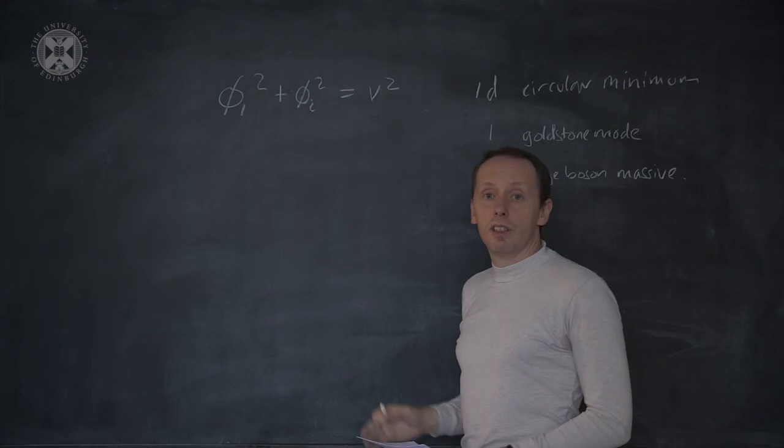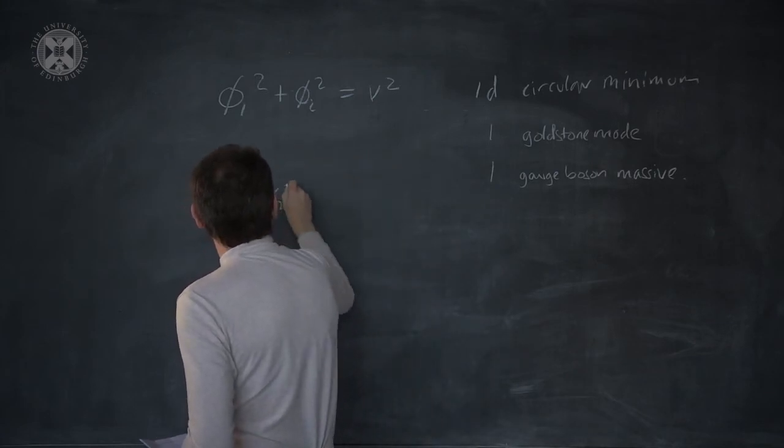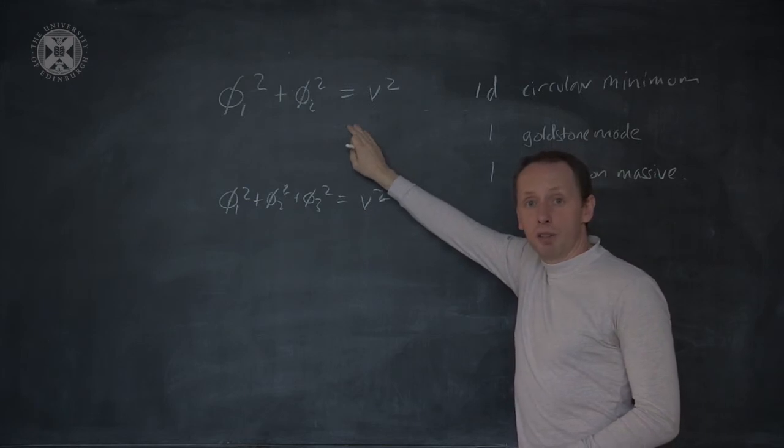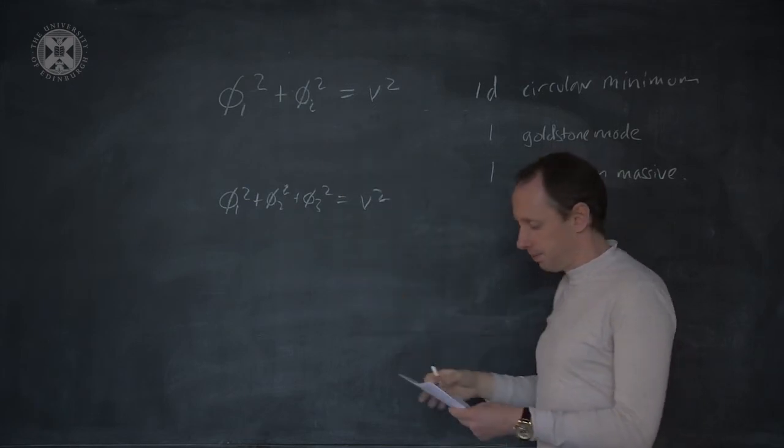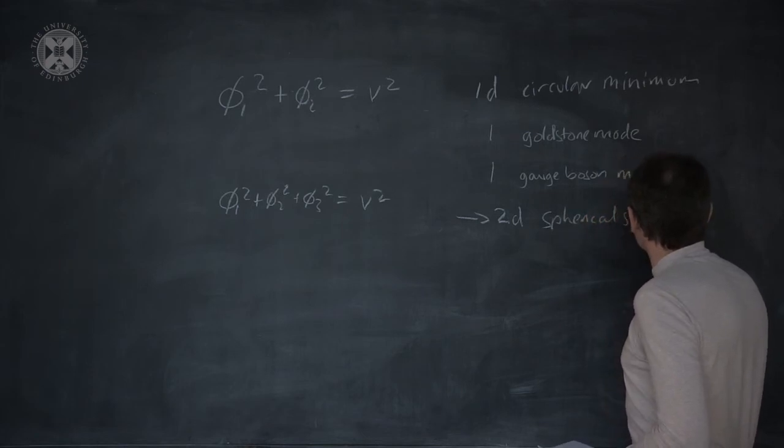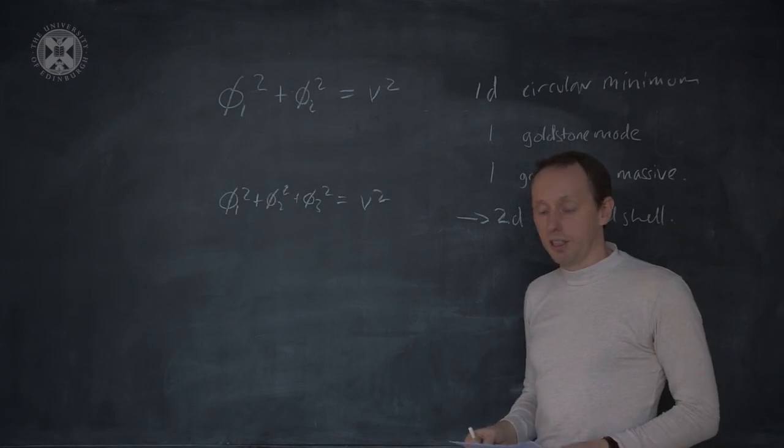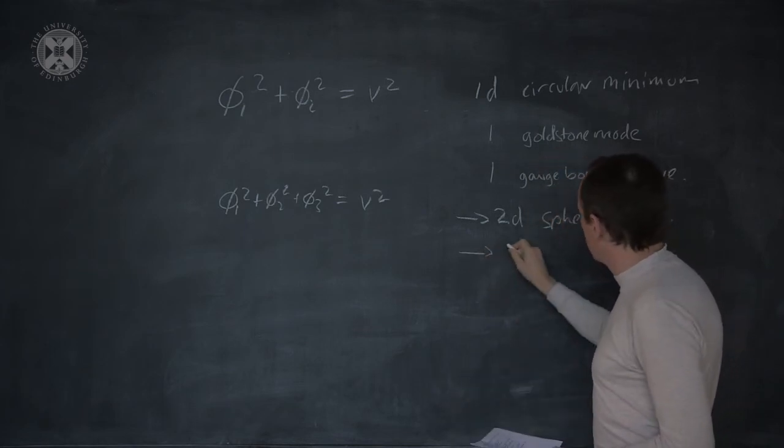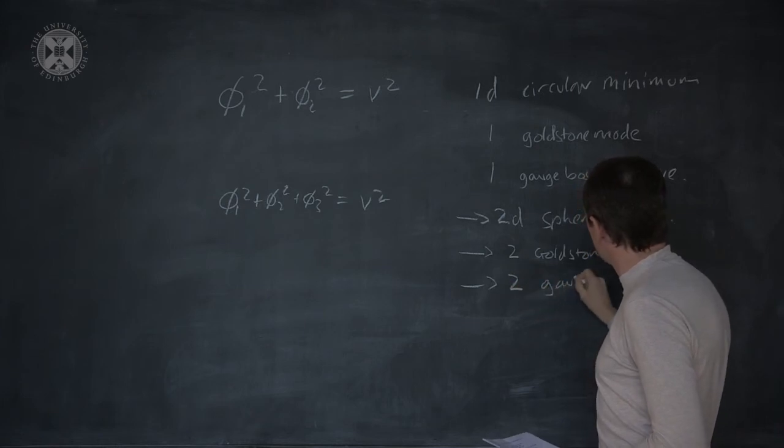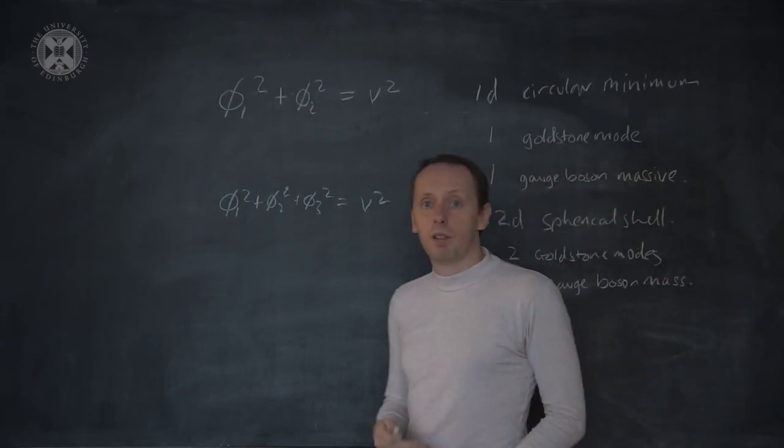Now, we can consider scalar fields with more than just these two components. If we have a constraint phi-1 squared plus phi-2 squared plus phi-3 squared is equal to v squared, instead of giving us the equation of a circle, we have the equation of a sphere. And we have a 2D spherical shell in phi-1, phi-2, phi-3 space. Just as the surface of the Earth is two-dimensional with two horizontal directions, that means in this case we would have two Goldstone modes and two gauge bosons could be given mass through the Higgs mechanism.